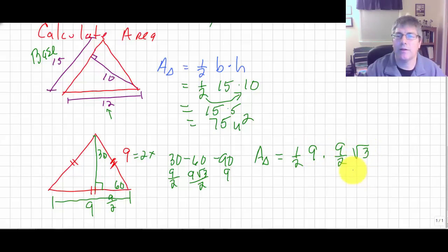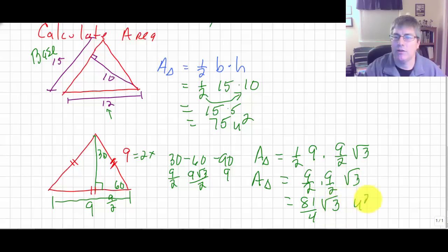So not the prettiest numbers in the world, 9 halves times 9 halves square root of 3. So we get 81 fourths, radical 3, units squared.